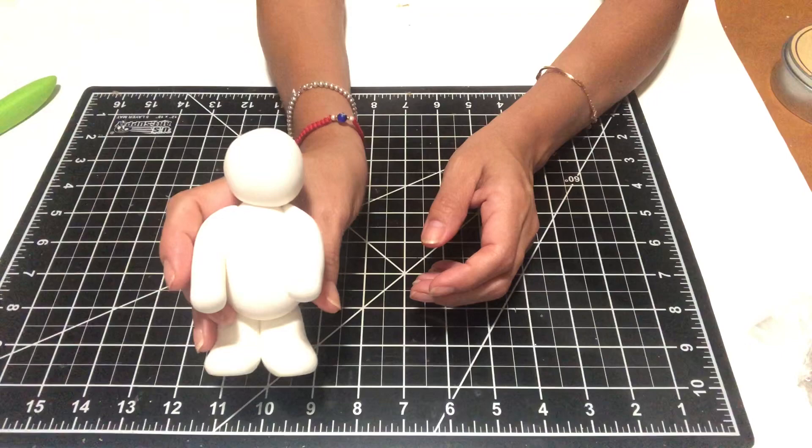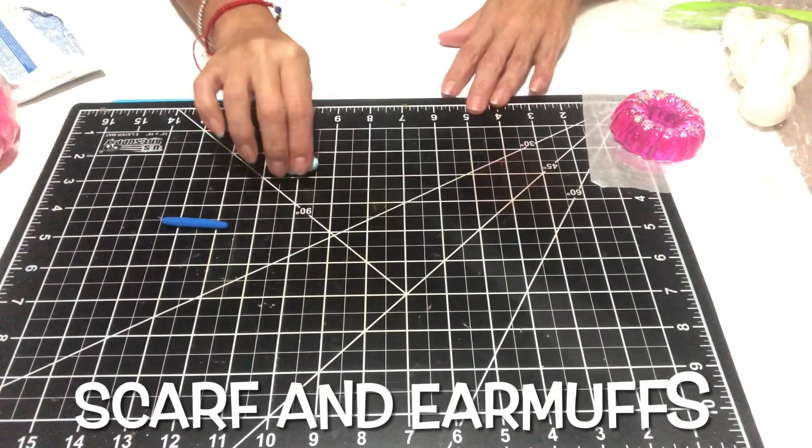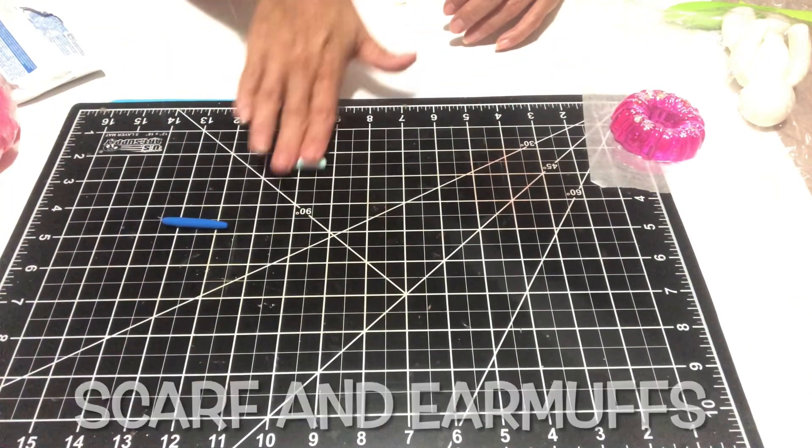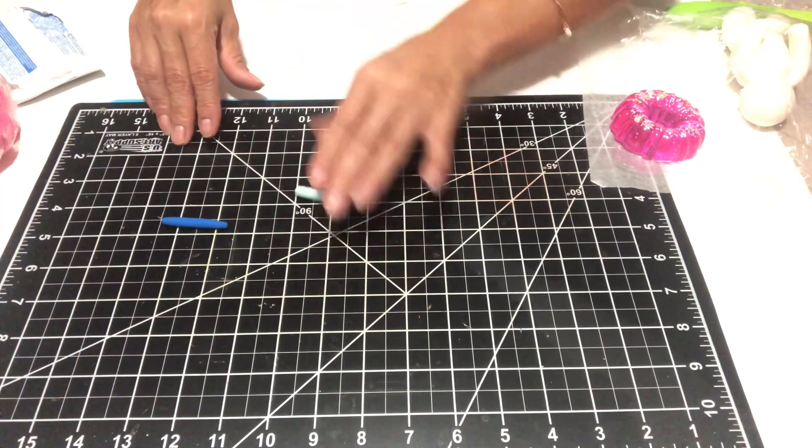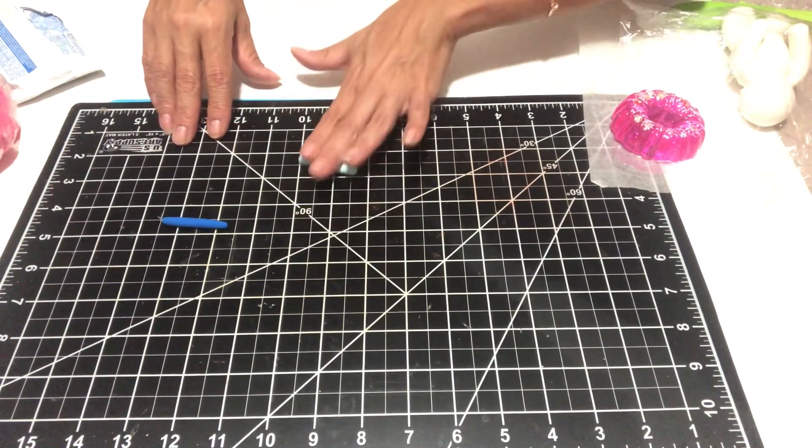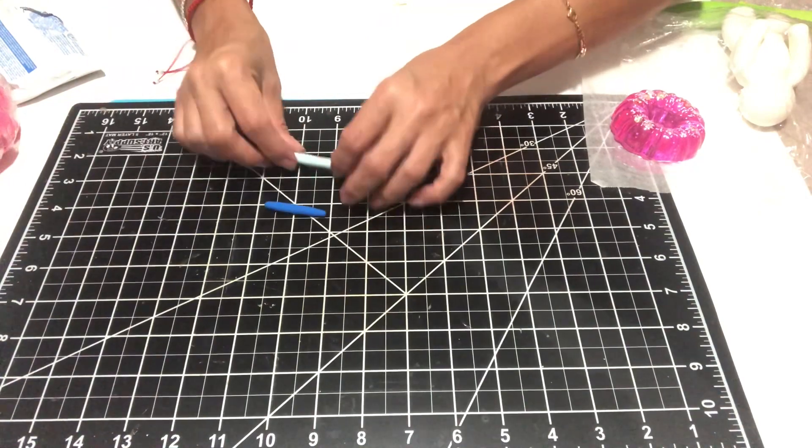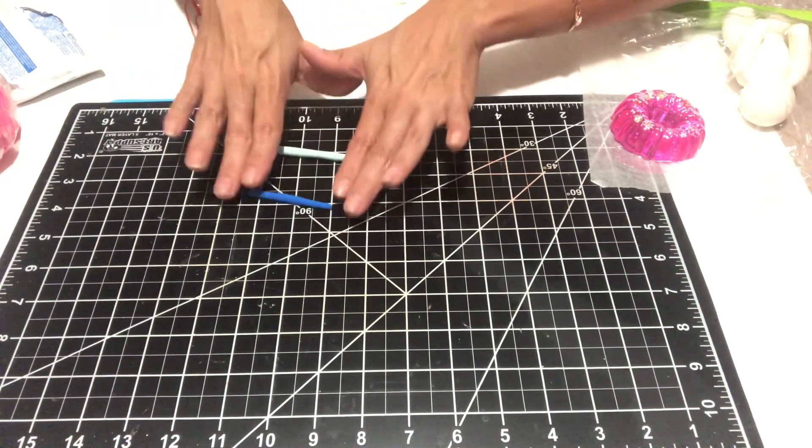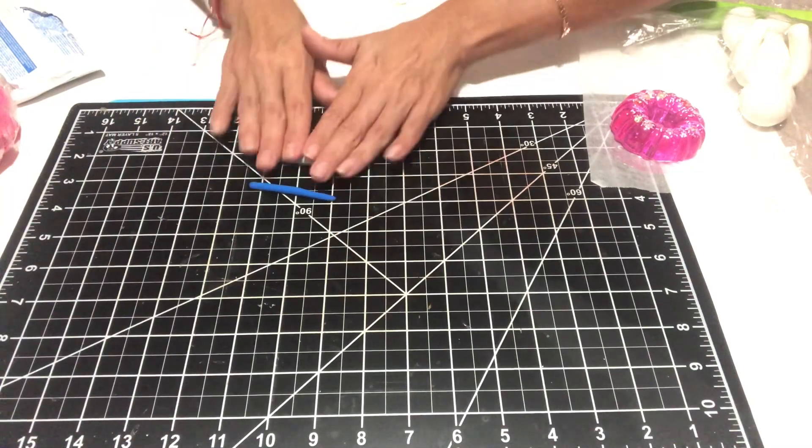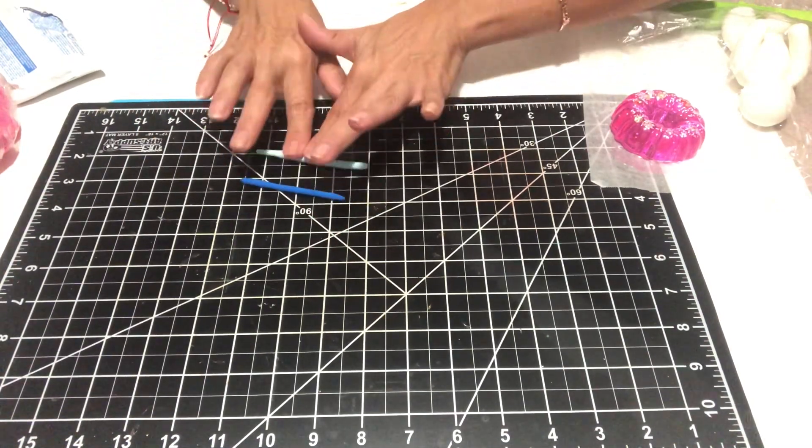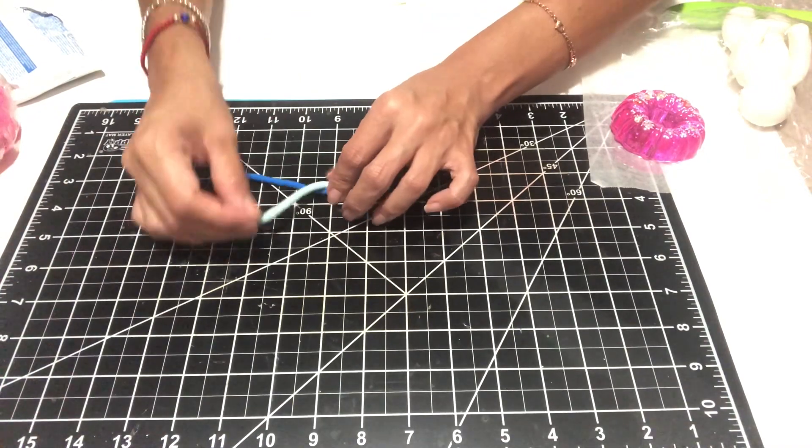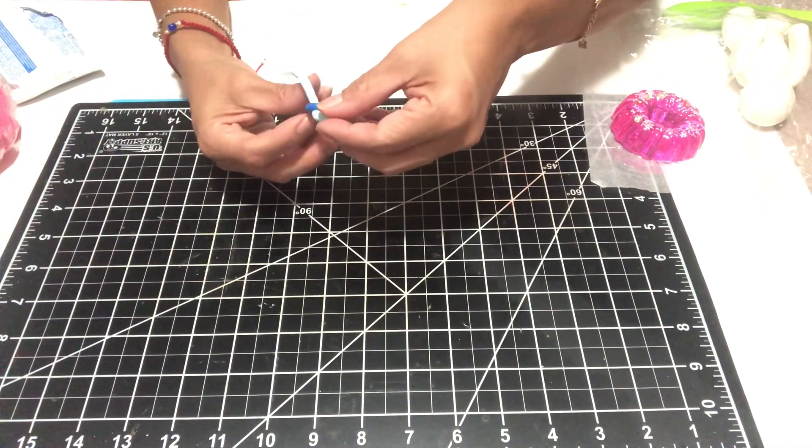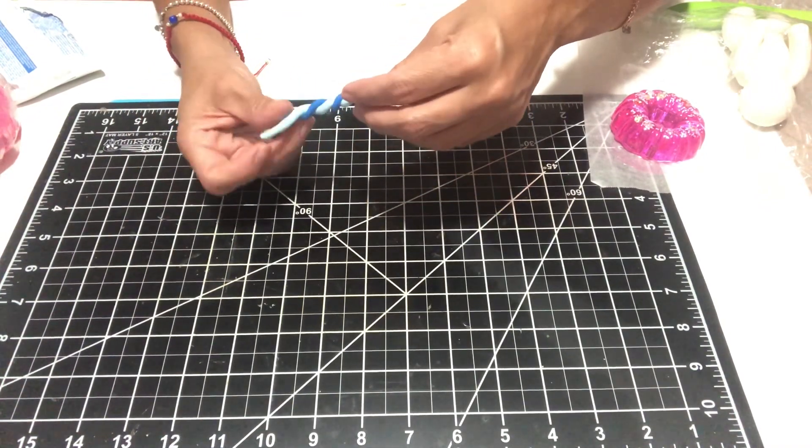Once I have my snowman, here it is all formed. I am going to wrap him in saran wrap as well and place him to the side because I do not want the clay to dry just yet. So now I'm going to be doing my scarf. I chose to keep the scarf like a rope shape type, if that makes sense. You can flatten it—I did flatten the ends of it by using my clear block, but it's up to you.